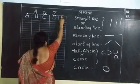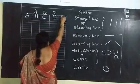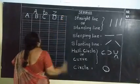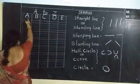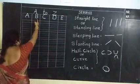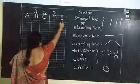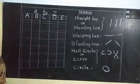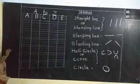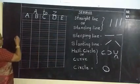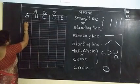By using these strokes only, we can write the alphabet. This is capital E. Capital A, B, C, D, E. E after F.